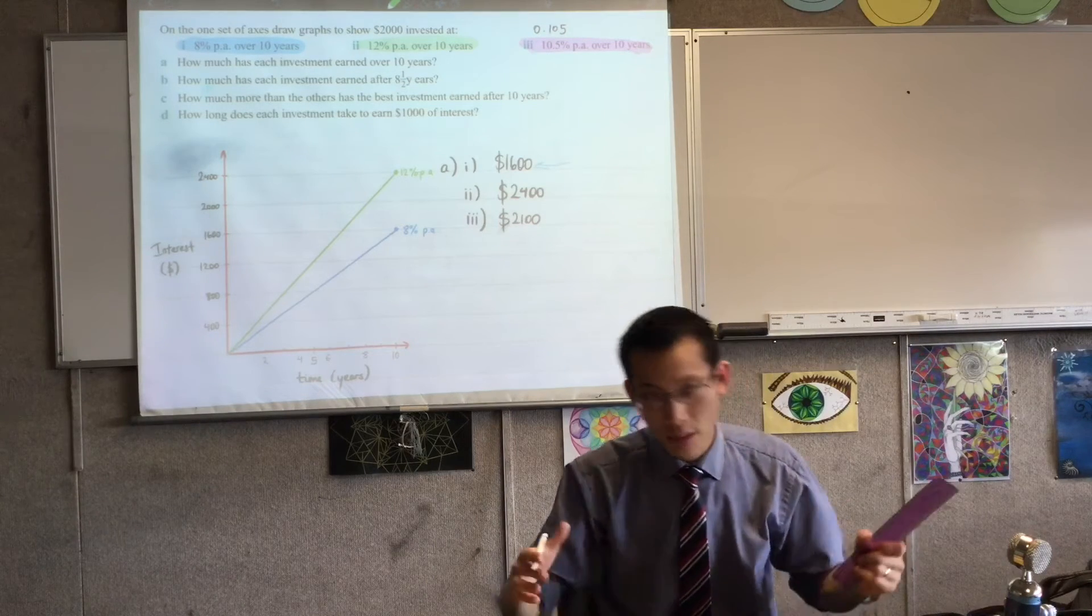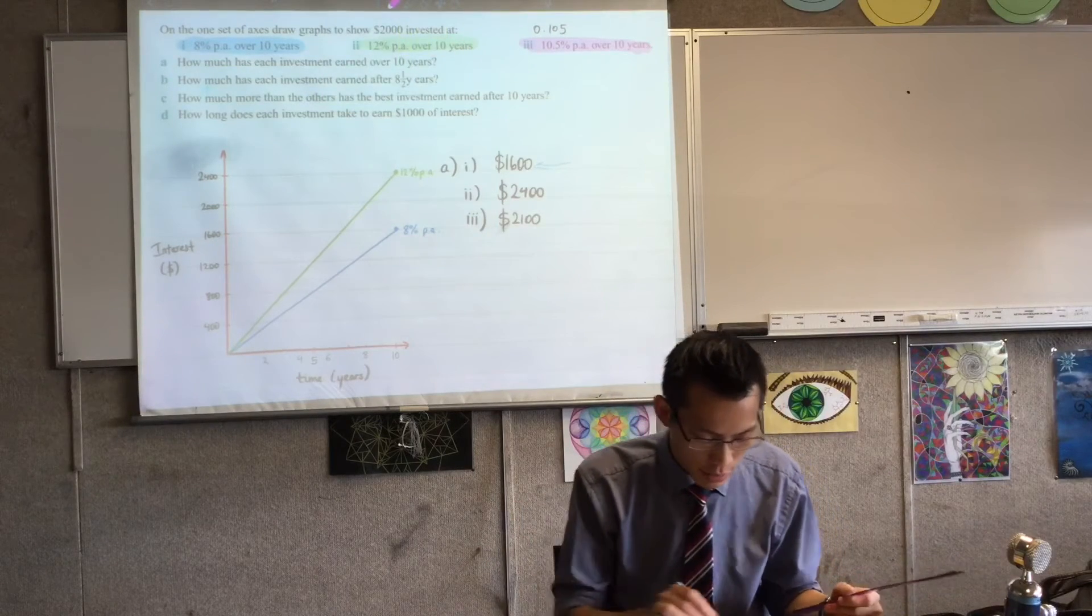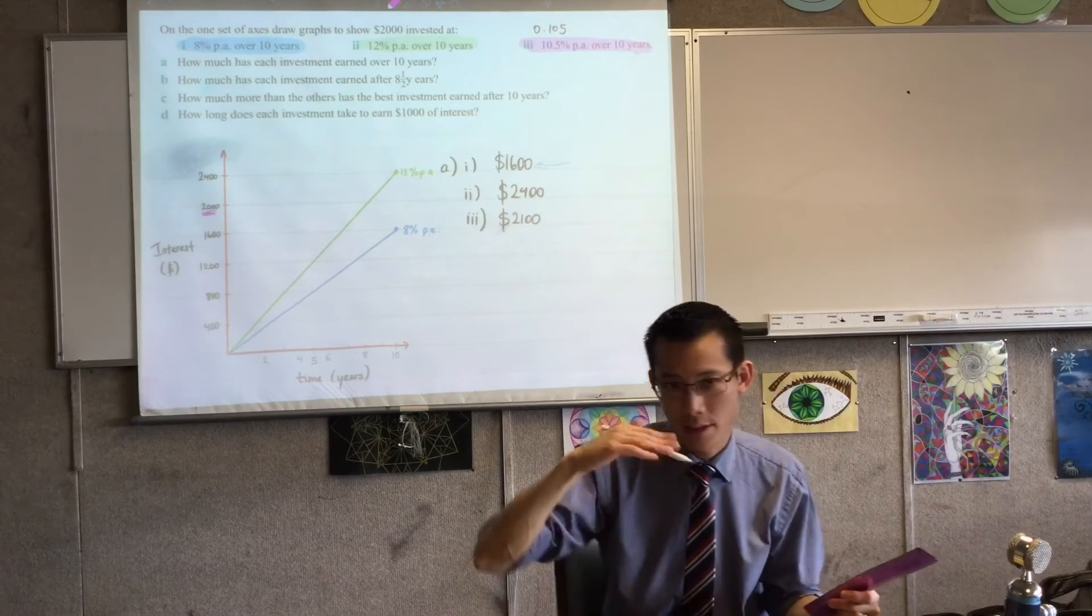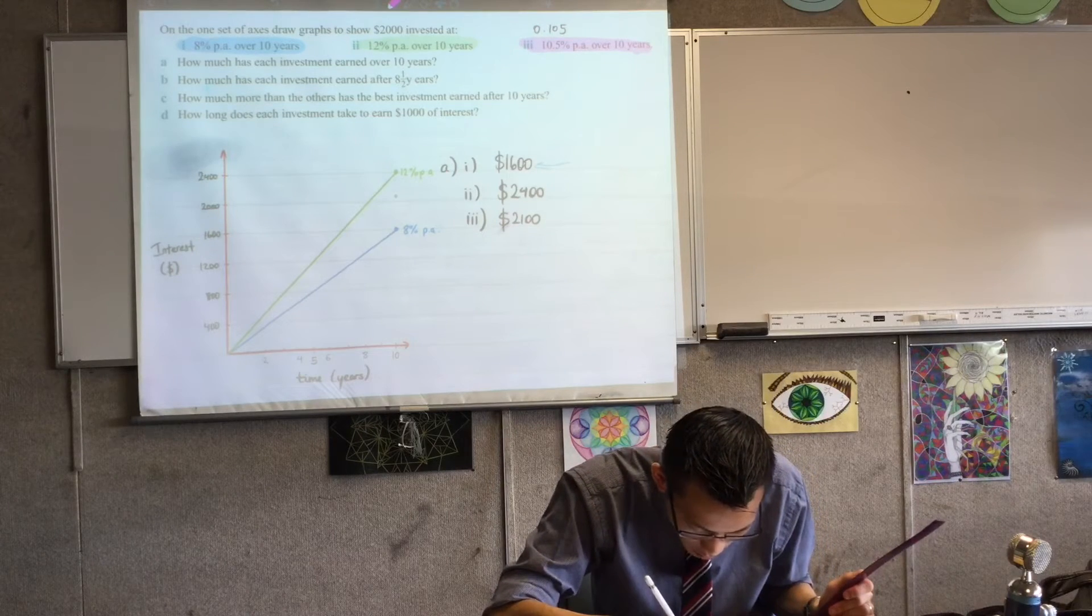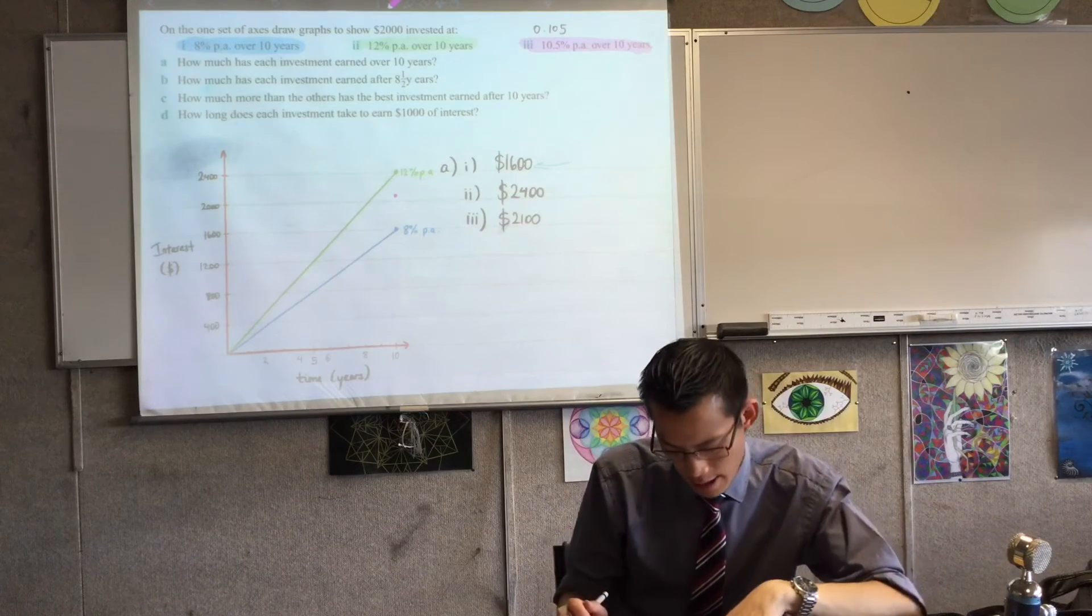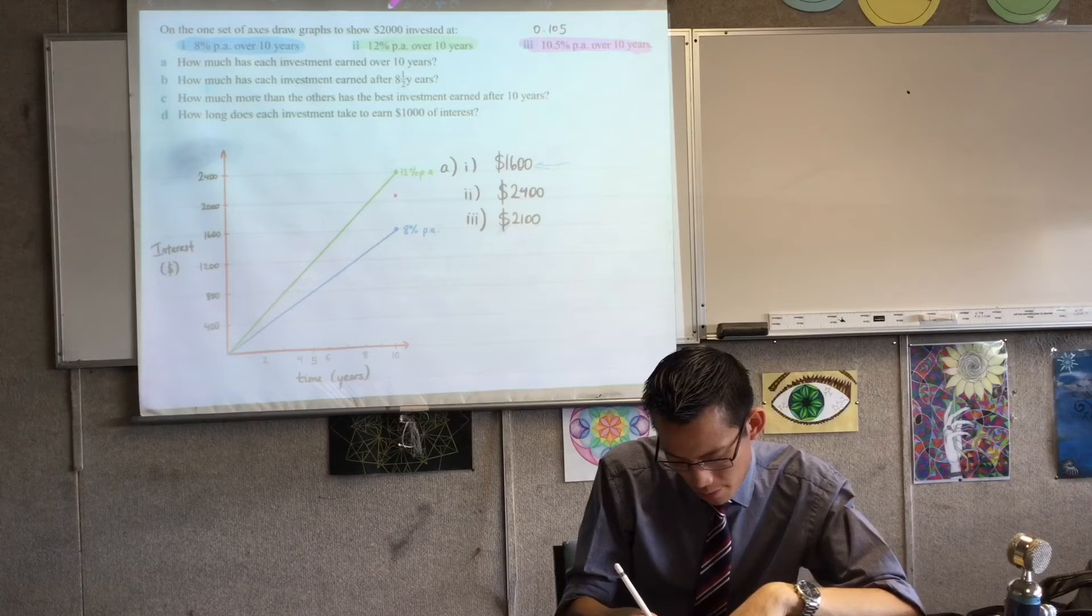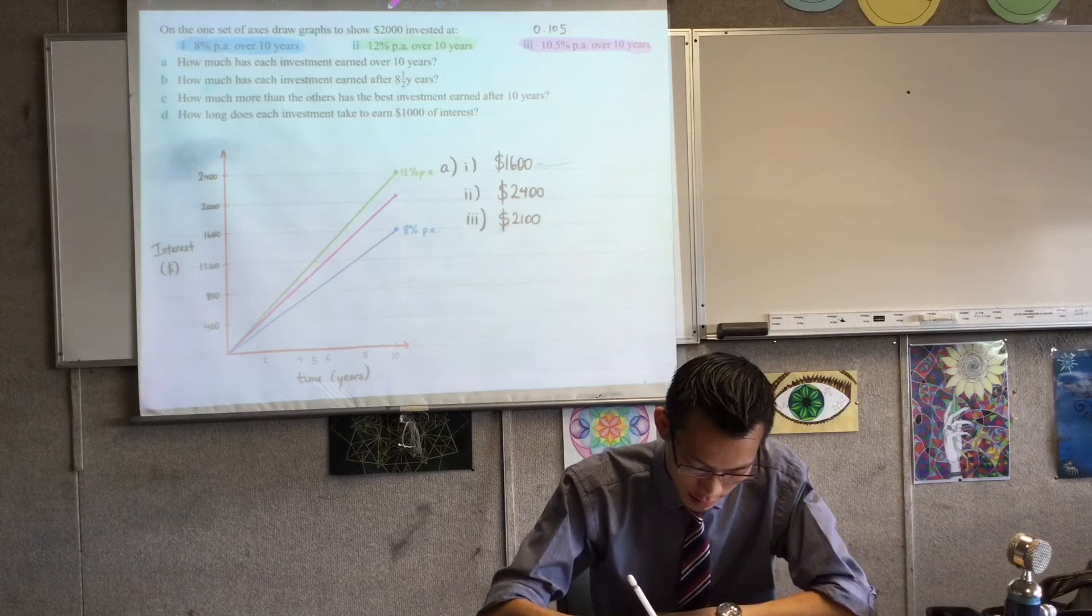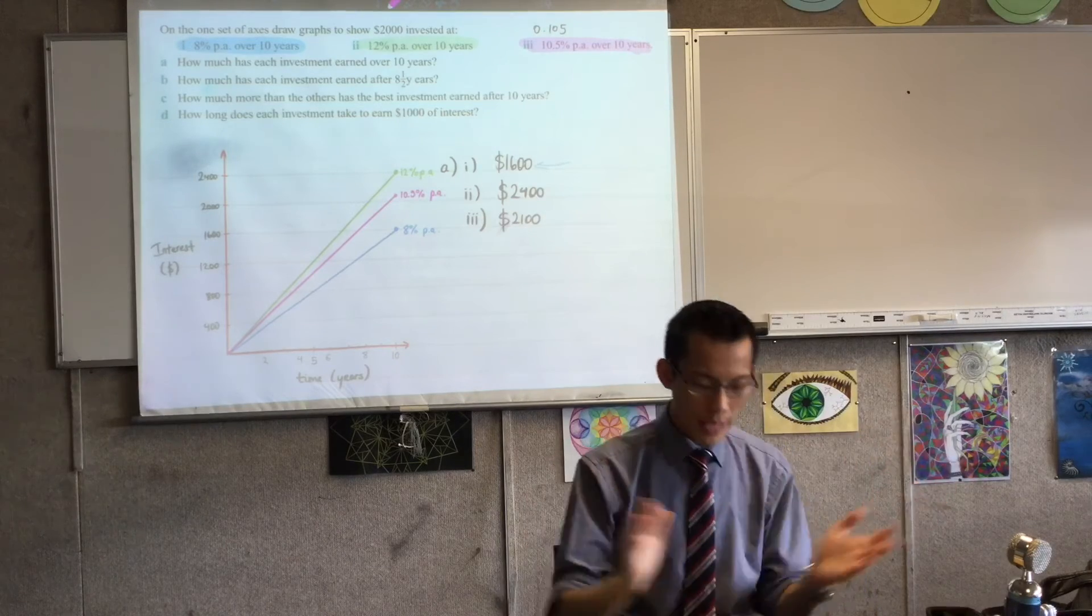And last one, $2,100, that's going to be kind of in between. So I've decided to call this one pink. $2,100 should be just above this $2,000 line, right? In fact, it should be a quarter of the way up because each one is $400. So I'm going to estimate it's about there, roughly. Again, if you've got a grid book, you'll be able to do this much more accurately than I can. But again, I'm going to measure it all the way to the origin. And that's what my graph looks like. Last labeling, that's 10.5% per annum.